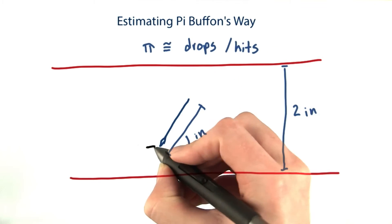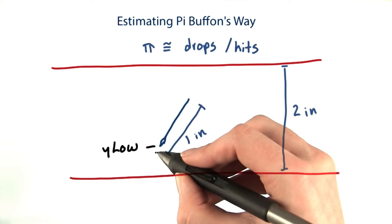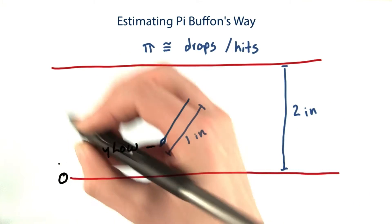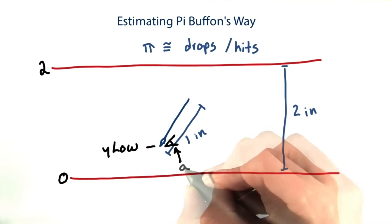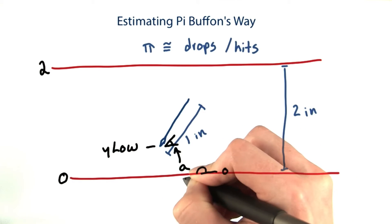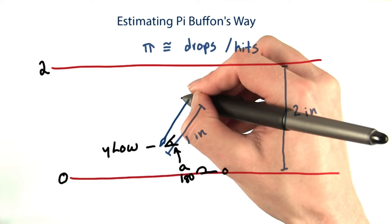We randomly generate a y low, or the lowest point of the needle, which should be somewhere between 0 and 2. Then we calculate an angle A between 0 and 180, and use this angle to figure out y high.